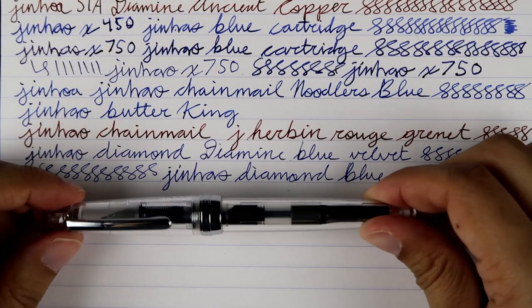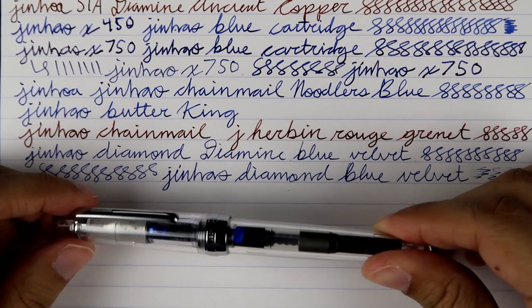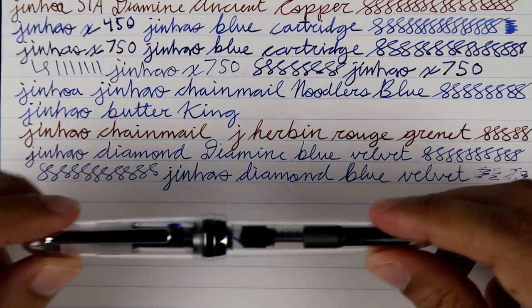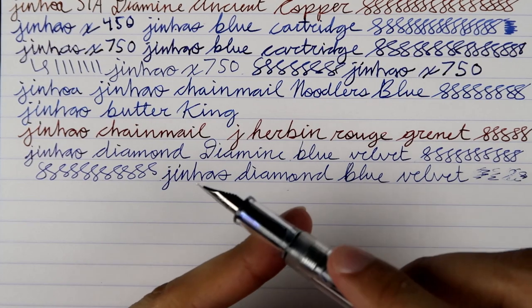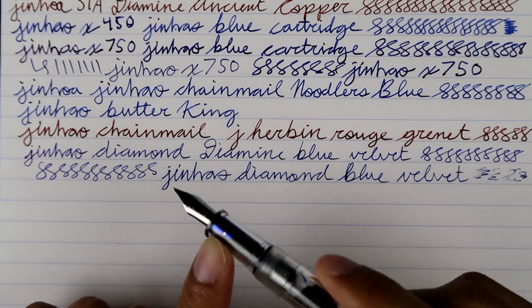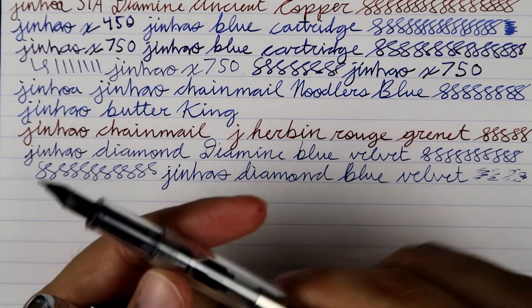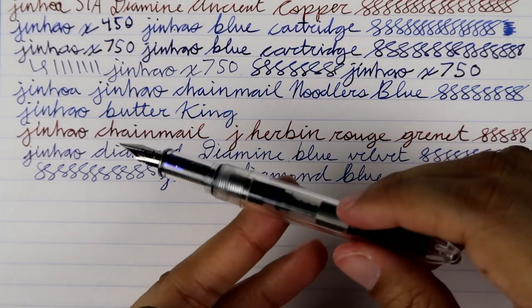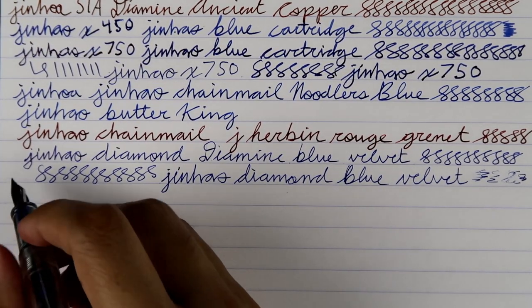Alright, we got another demonstrator. Jinhao, this is a Jinhao 992, clear demonstrator. You can see I got it with some blue ink in there, no secrets here. See it's a demonstrator, you can even see the ink, basically everywhere. All up inside this, all up inside. Whatever color you put, you see it. Tappy little tappy tap, get that ink going, get it flowing. Let's see what we got here.